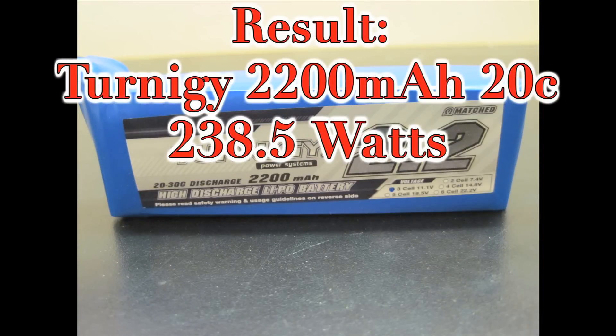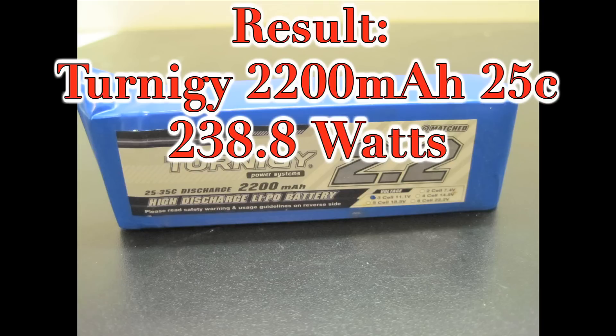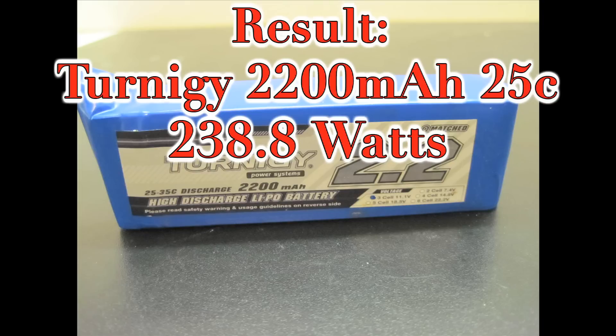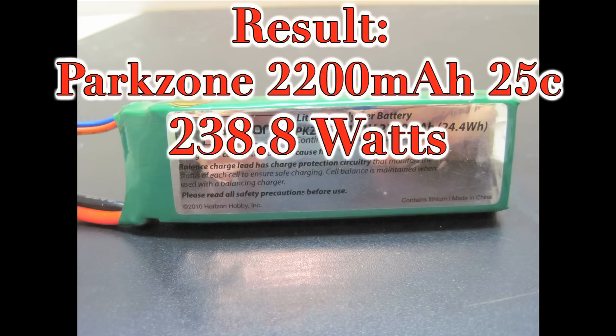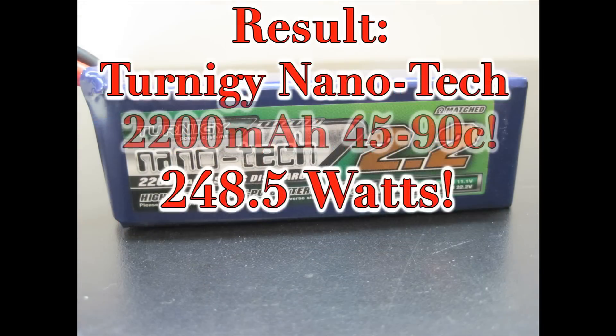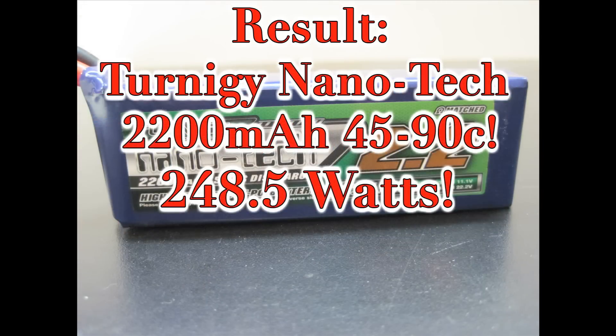So as you can see, the 2220C is the cheapest battery, 238.5, so 238.5 watts, you only go up by less than a watt when you go to the 25C discharge. The Park Zone is exactly the same as the Turnigy, and the Nanotech blew them all away, went 10 watts over, so major output difference there. The Nanotech charges faster, is a little bit more expensive, but it will give your plane the extra power.